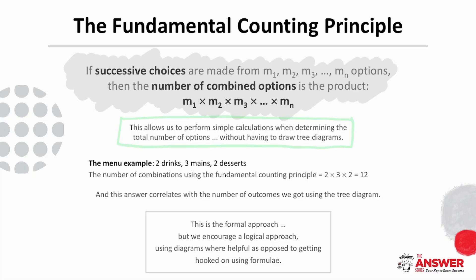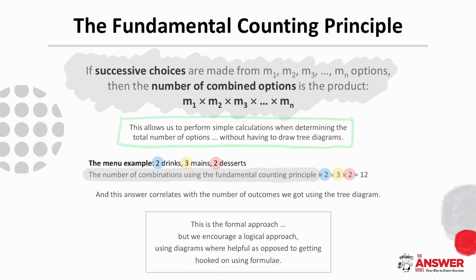This principle allows us to perform simple calculations when determining the total number of options without having to draw tree diagrams each time. Thinking back to the menu example where our options were two drinks, three mains and two desserts, if we use the fundamental counting principle to find the number of combinations, we go two times three times two, and the answer of 12 correlates with the 12 combinations we got using the tree diagram.